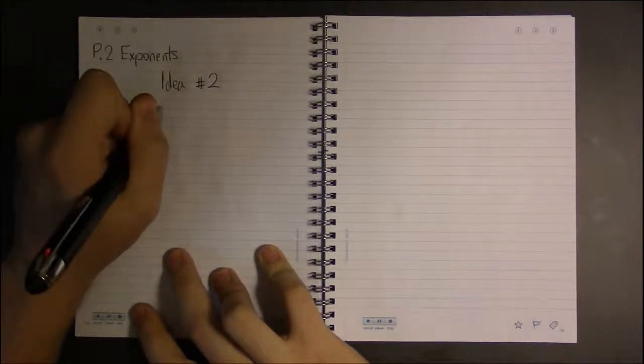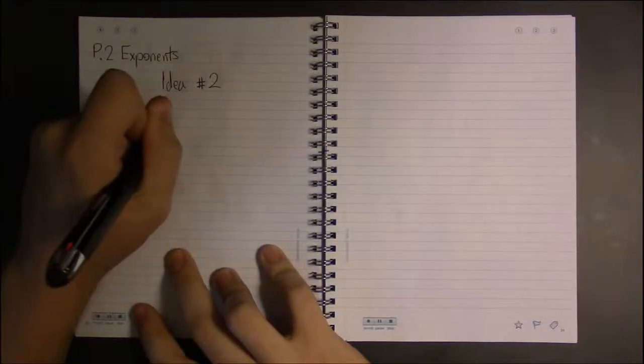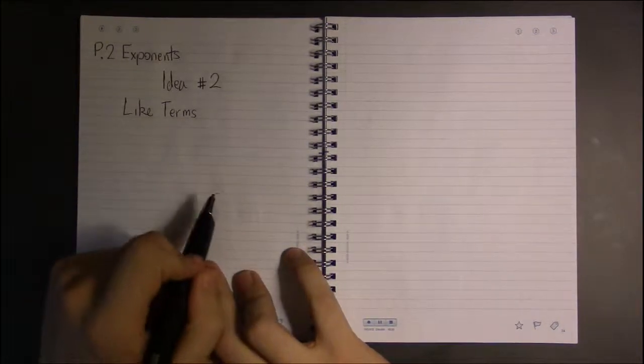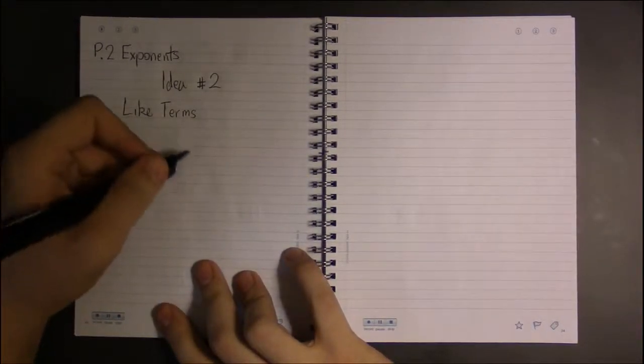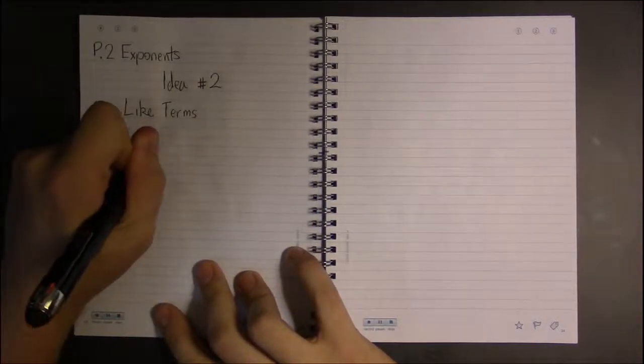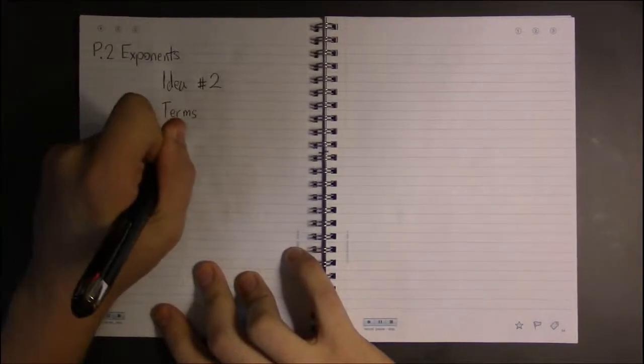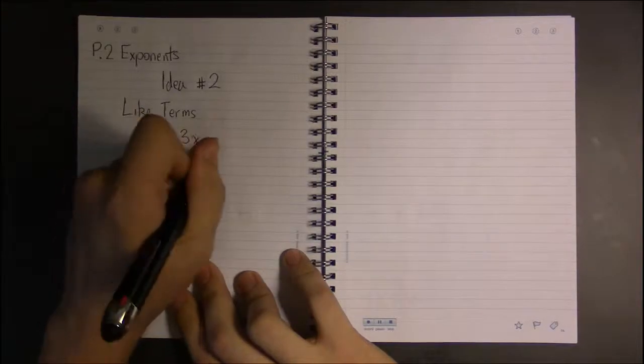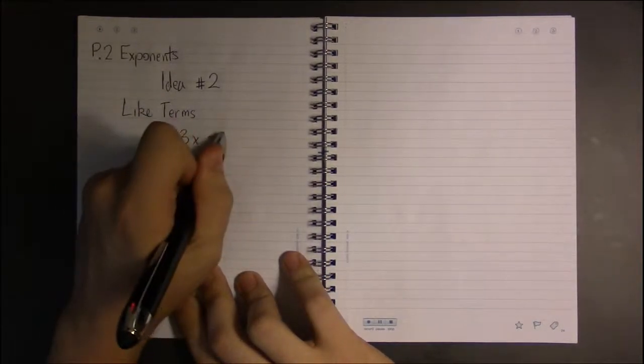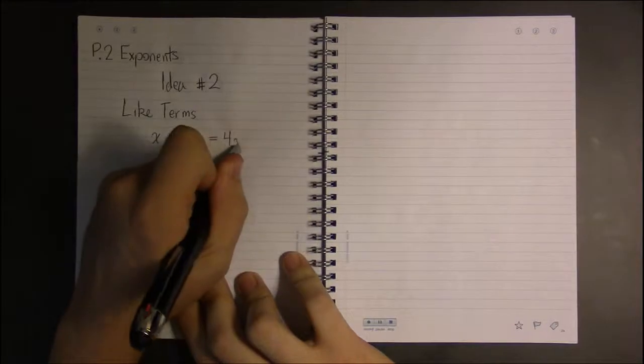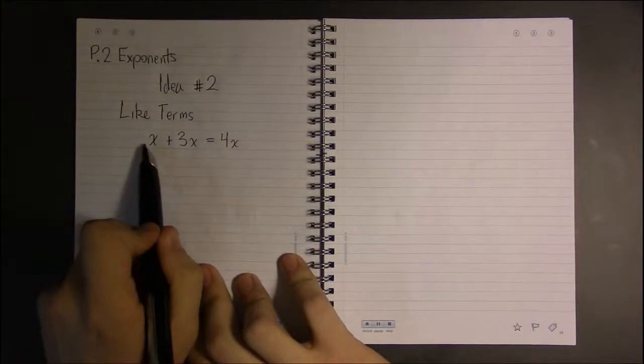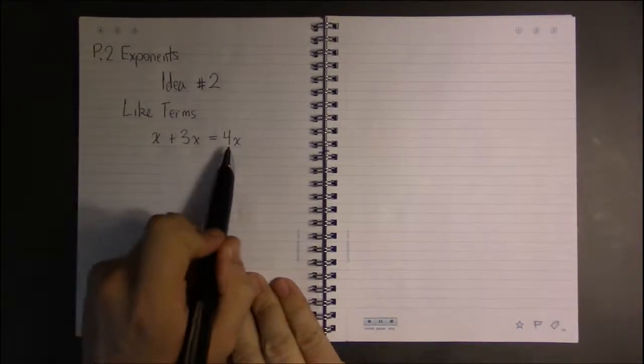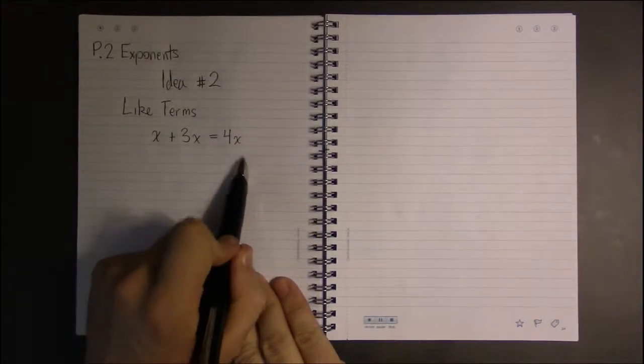is the idea of like terms. Now like terms are nice because they can be added or subtracted. You might think about it as having x plus 3x. We say that x and 3x are like terms and we are able to then combine them to get 4x. If I have 1x and I add three more x's, I have 4x's in total.